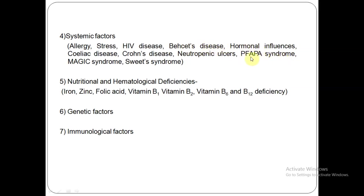In MAGIC syndrome, you have oral ulcers, genital ulcers, as well as inflammation of cartilage. In Sweet syndrome, you have apthous ulcers and oral ulcerations along with rashes in various parts of the body like your trunk or arms. Nutritional and hematological deficiencies, as well as genetic and immunological factors, are also implicated.